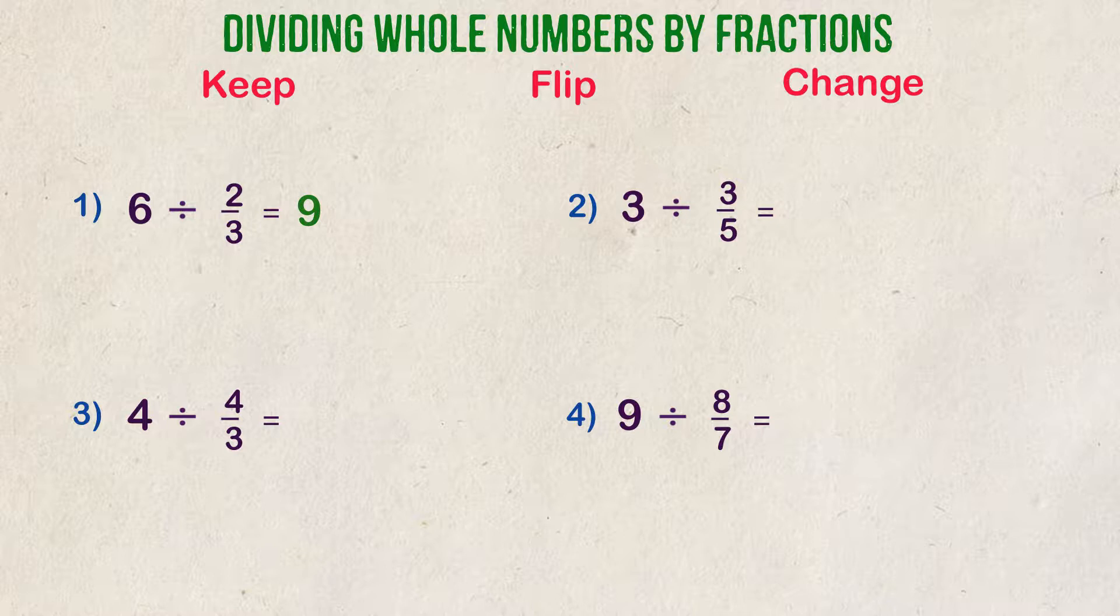Example 2. Divide 3 by 3 fifths. First thing we do is change 3 into 3 over 1, and we keep that fraction the same. We flip our second fraction to be 5 thirds, and now we multiply.